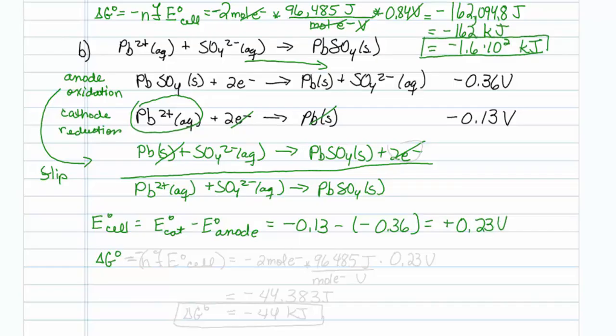Now to find delta G. Delta G naught is going to be equal to NF E cell. And I need a negative sign in front of that. Don't forget it's negative NF E cell. So that would be minus. And once again, I've balanced this particular one with 2 moles of electrons. The Faraday constant is 96,485 joule per mole electron volts. And this is 0.23 volts. So when I plug that all into my calculator, I get a minus 44,383 joules, which is minus 44 kilojoules for the value of delta G naught for this particular reaction.